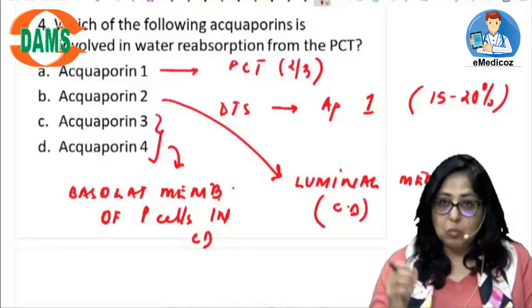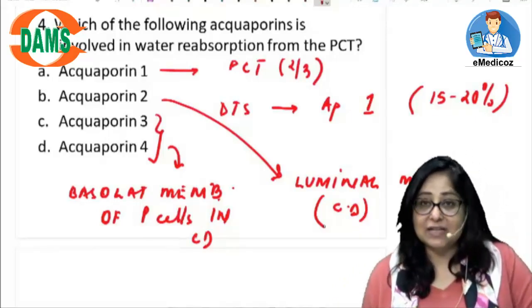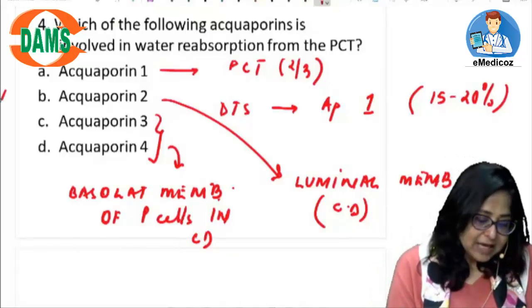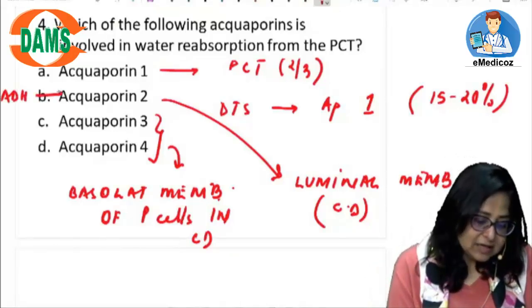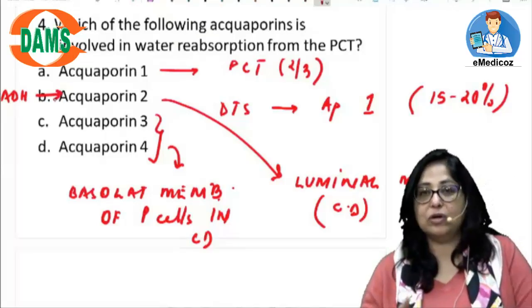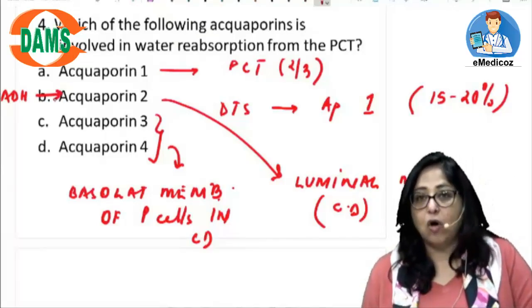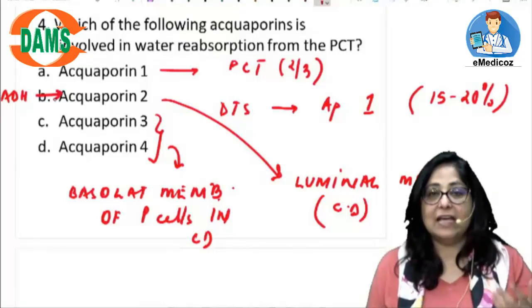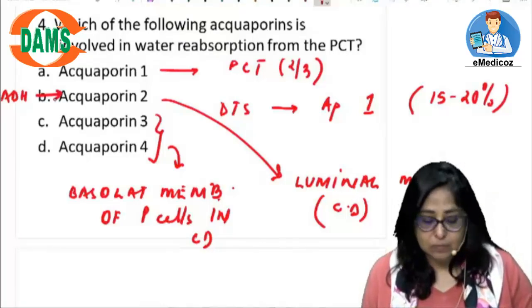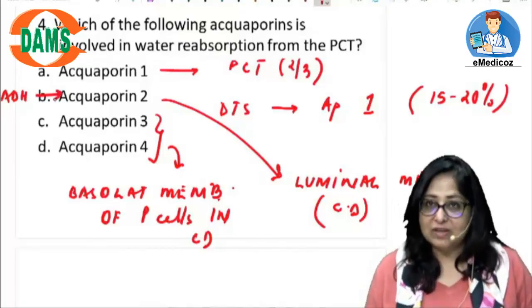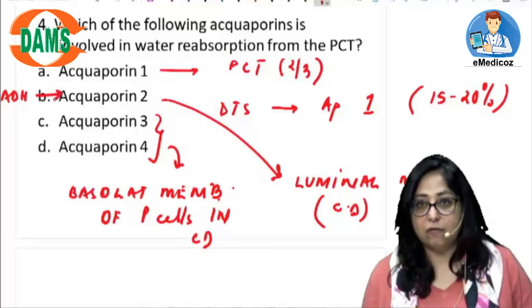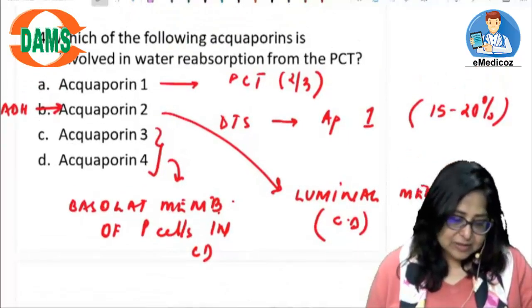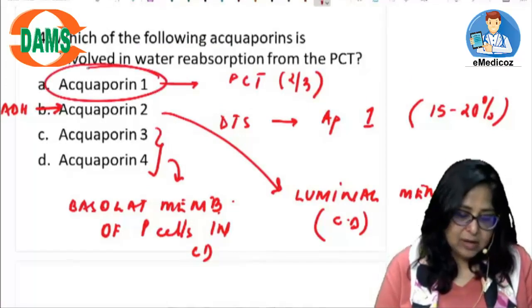Out of these aquaporins, which are affected by ADH? It is aquaporin 2. ADH increases the insertion of aquaporin 2 on the luminal side of the P cells in the collecting duct, thereby helping to increase water absorption. ADH has no effect on aquaporin 1, 3, or 4. So the answer to this question — in the PCT, aquaporin 1.